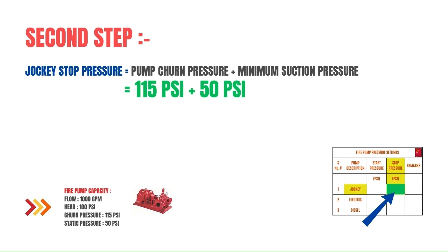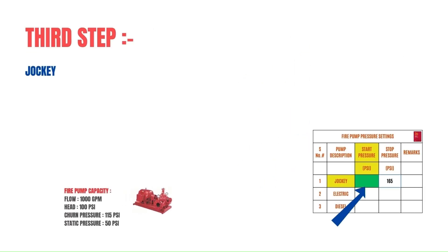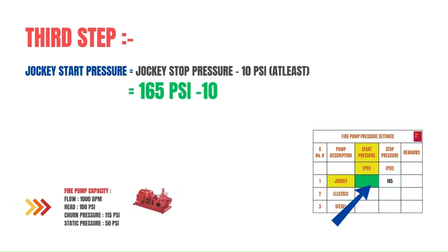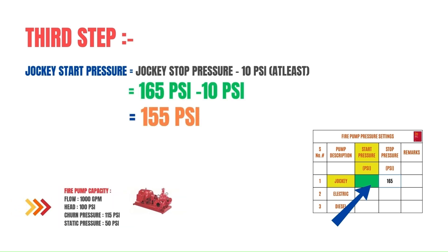After calculating the jockey stop pressure, we move to the third step: calculating the jockey pump start pressure. The jockey pump start pressure will be the jockey stop pressure minus at least 10 psi. So from our data: 165 psi minus 10 psi gives us 155 psi.